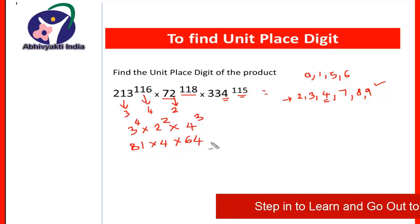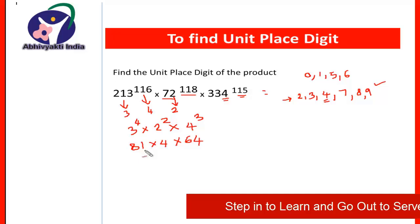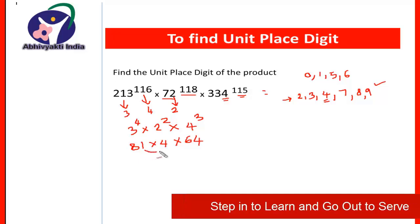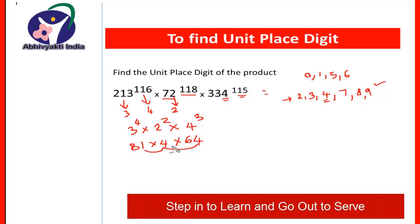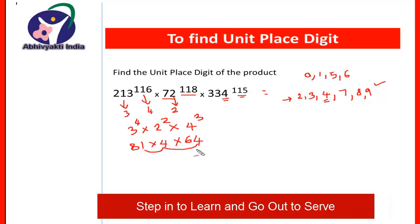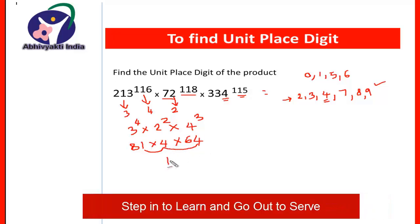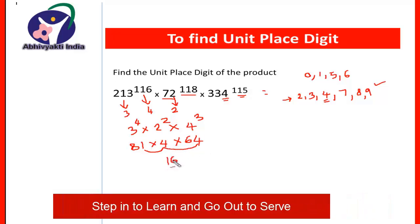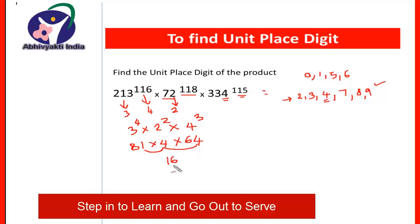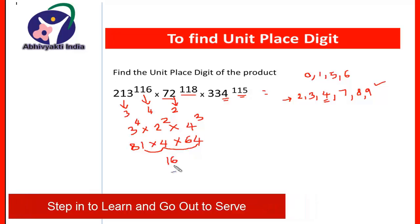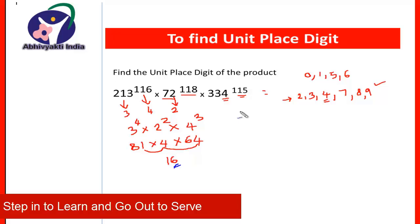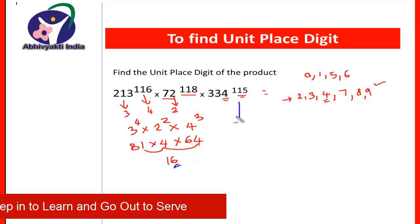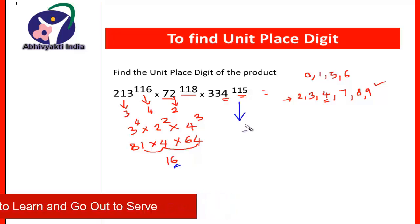To find the unit place of this product, we multiply the unit place digits: 1 × 4 × 4 = 16. So the product of the unit places is 16, and its unit place digit is 6. The unit place digit of this result will also be 6.